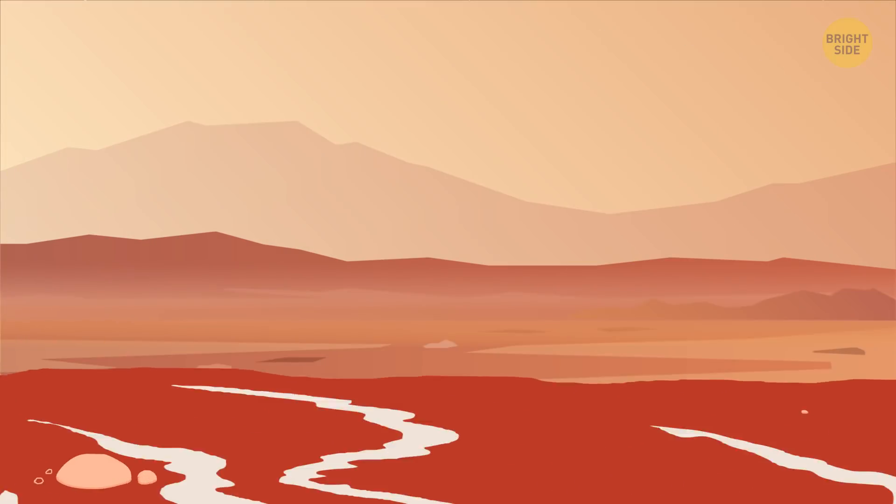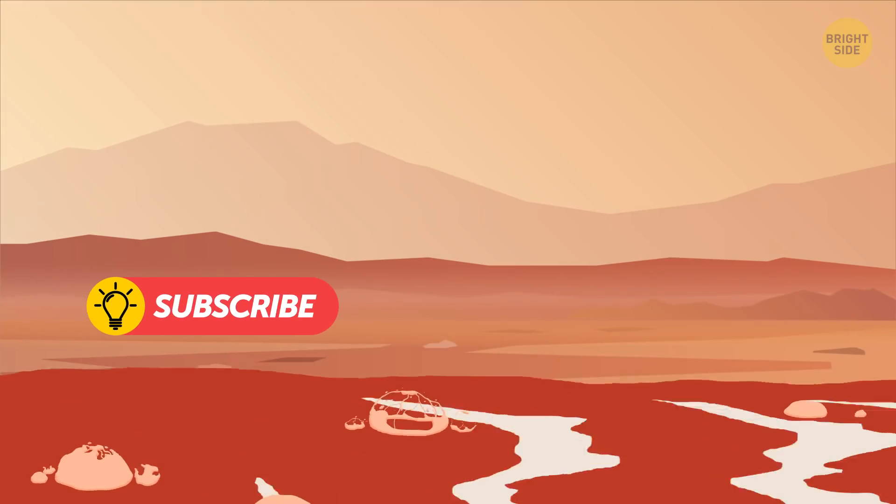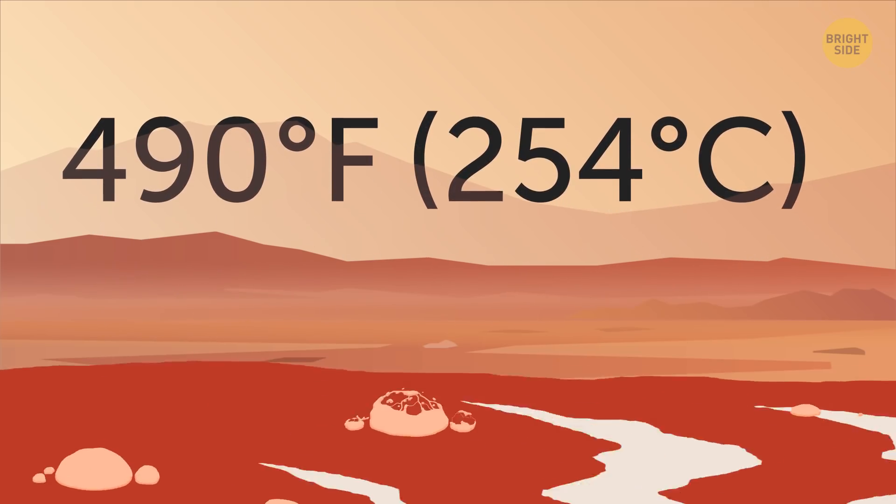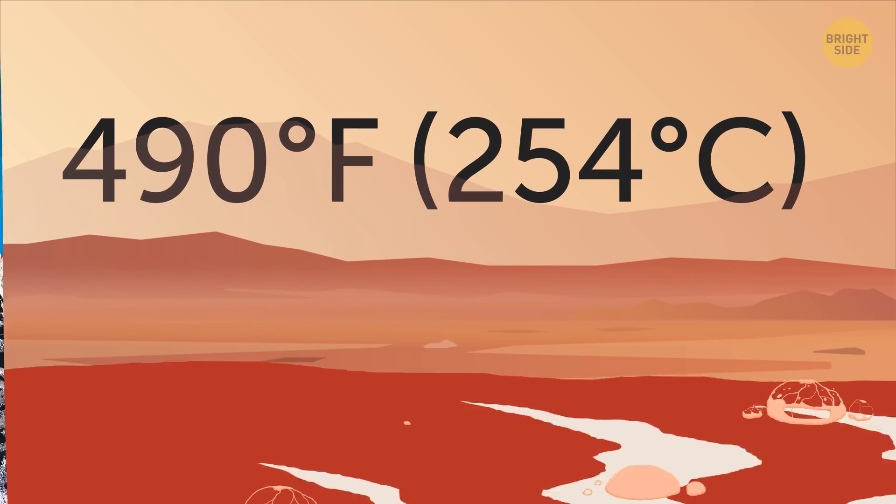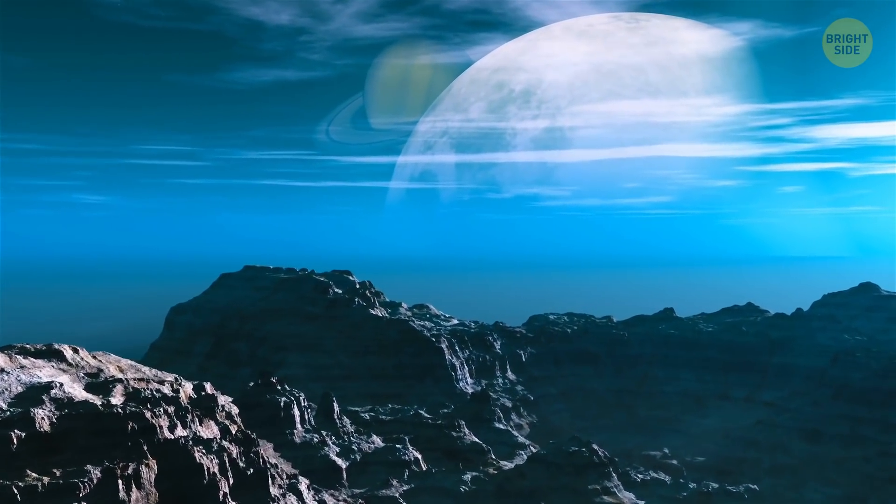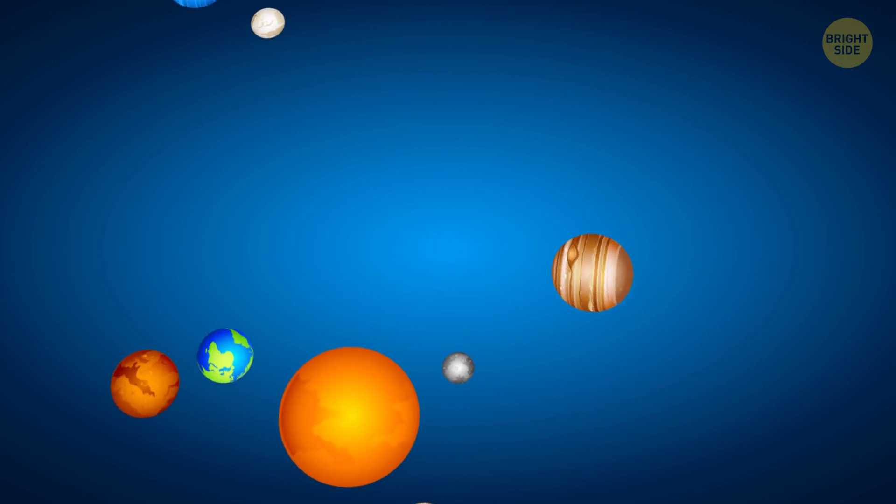How hot exactly? It's hard to get an exact measurement, but the surface temperature is estimated to be a boiling 490 degrees Fahrenheit, hot enough to melt tin. This planet can't support life as we know it, but astronomers were still thrilled by its discovery.